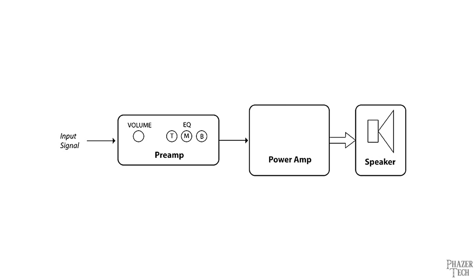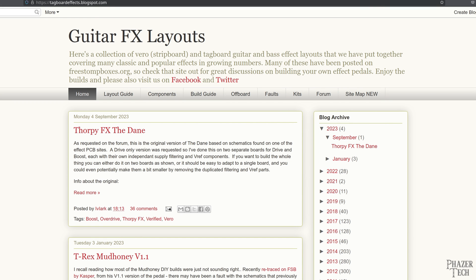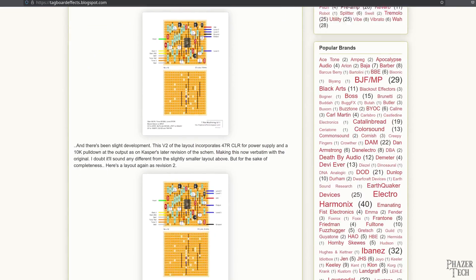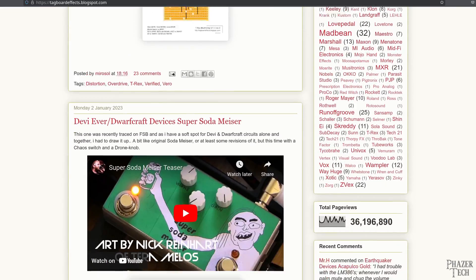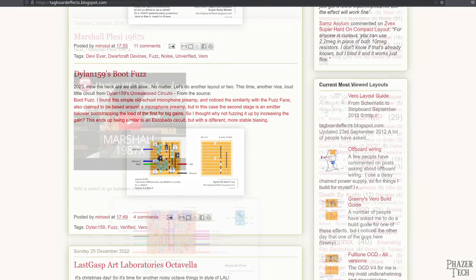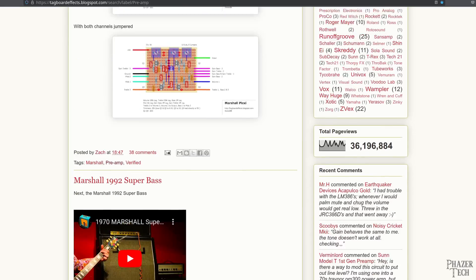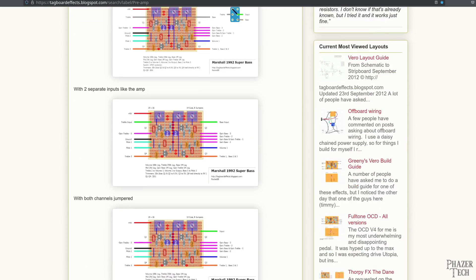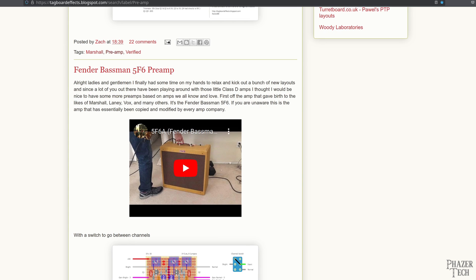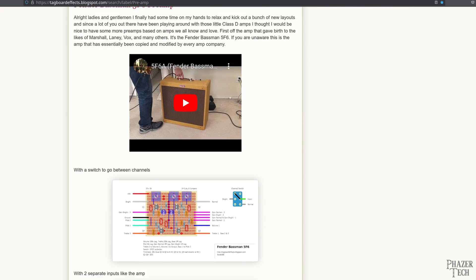Along with the speaker, which also plays a role in both of those things. Now, in my previous videos I showed various sites such as Tag Board Effects where you can find stripboard layouts for almost every pedal on the market. And it turns out these sites also have layouts for preamps as well. This is where I found the preamp designs for both of these amps, and I soldered them myself just like I showed in my DIY pedal guide.